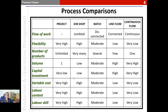Capital investment for a project type of operation is typically very low relative to continuous flow, where it is very high. In all these dimensions there is either a monotonous increase from low to high or from high to low. The same is evident as we look at the last three dimensions: variable cost, which goes from very high to very low; labor content, which goes from very high to very low; and labor skill, which also goes from very high to very low.